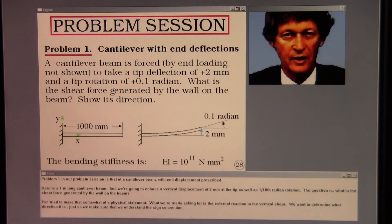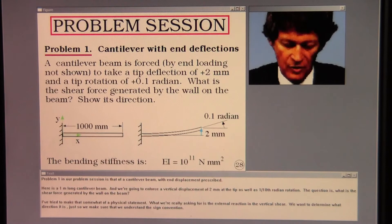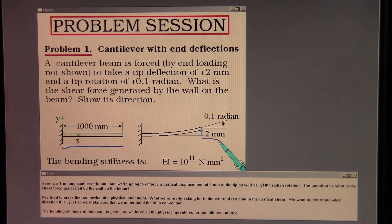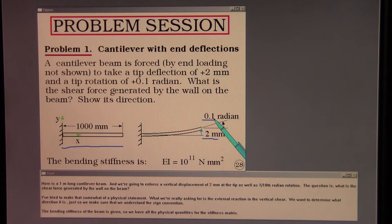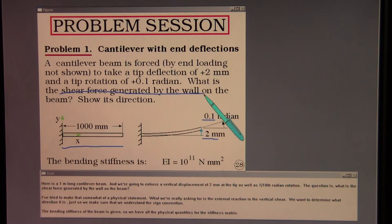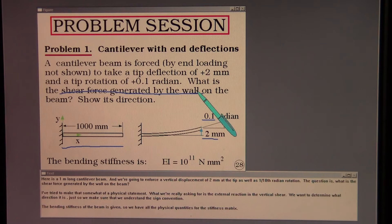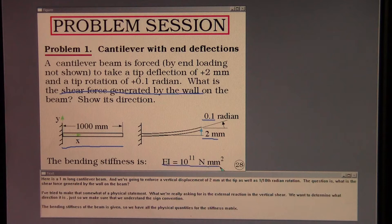One that I haven't mentioned yet is that really the location of the nodes at the end of an advanced beam element is put at the line of shear centers. Not the centroidal axis nor something else having to do with mass distribution. Perhaps a mass axis. So even the definition of the nodes that define such an advanced beam is an interesting question in itself. Problem one in our problem session is that of a cantilever beam with displacements prescribed. Here is a one meter long cantilever beam. And we're going to enforce a vertical displacement of two millimeters at the tip as well as one tenth radian rotation. The question is what is the shear force generated by the wall on the beam?